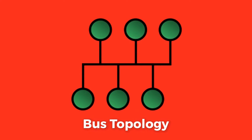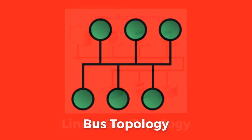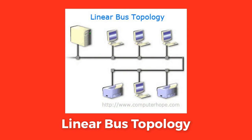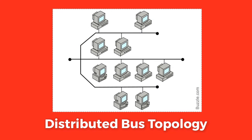Next we have the bus topology. In a bus topology, the nodes are directly connected to a common half-duplex link called a bus. There are two types: the linear bus topology, where the common communication link has exactly two endpoints, and the distributed bus topology, resulting from branching.